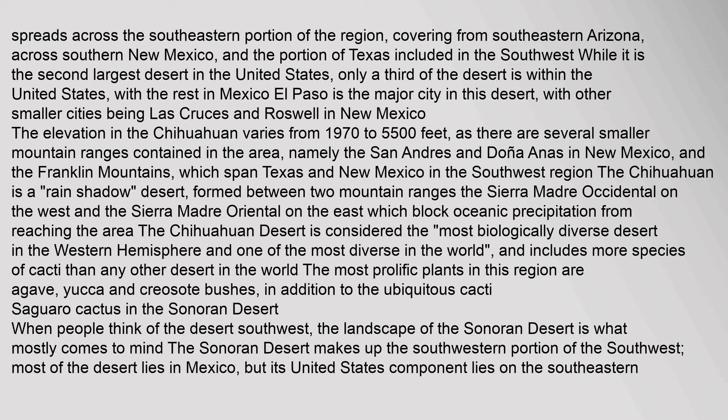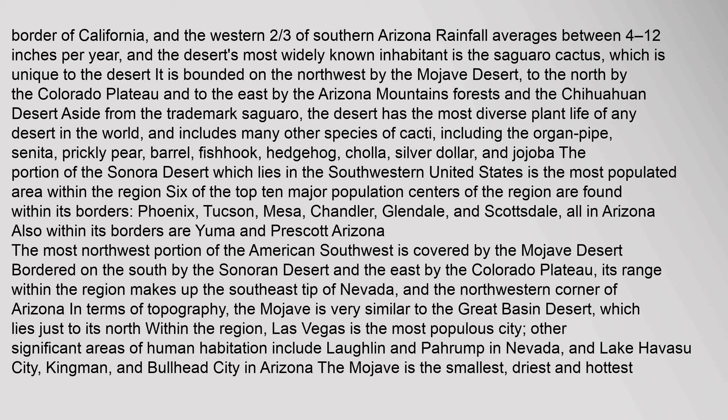The Chihuahuan Desert is considered the 'most biologically diverse desert in the western hemisphere and one of the most diverse in the world,' and includes more species of cacti than any other desert in the world. The most prolific plants in this region are agave, yucca, and creosote bushes, in addition to the ubiquitous cacti. When people think of the desert southwest, the landscape of the Sonoran Desert is what mostly comes to mind. The Sonoran Desert makes up the southwestern portion of the southwest — most of the desert lies in Mexico, but its United States component lies on the southeastern border of California and the western two-thirds of southern Arizona. Rainfall averages between 4–12 inches per year, and the desert's most widely known inhabitant is the Saguaro cactus, which is unique to the desert. It is bounded on the northwest by the Mojave Desert, to the north by the Colorado Plateau, and to the east by the Arizona Mountains forests and the Chihuahuan Desert.